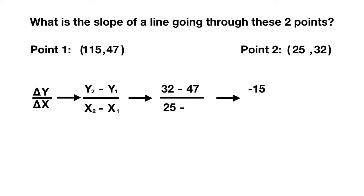What is x1? Well the x coordinate of point 1 is 115. What is 25 minus 115? That equals negative 90.